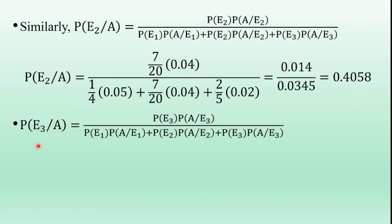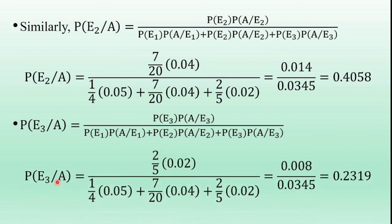Similarly, P(E3|A) = P(E3)·P(A|E3) divided by P(E1)·P(A|E1) + P(E2)·P(A|E2) + P(E3)·P(A|E3). Substituting the given data values and simplifying, we get P(E3|A) = 0.2319. This is the example of Bayes' theorem and this is a previous examination question.